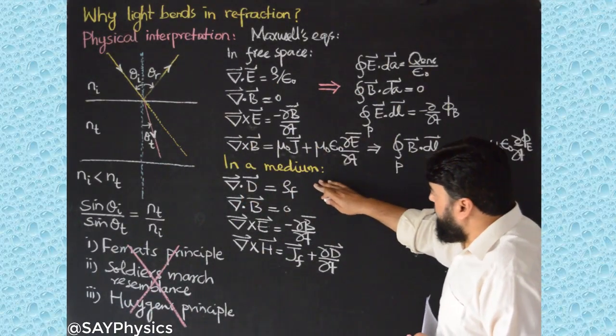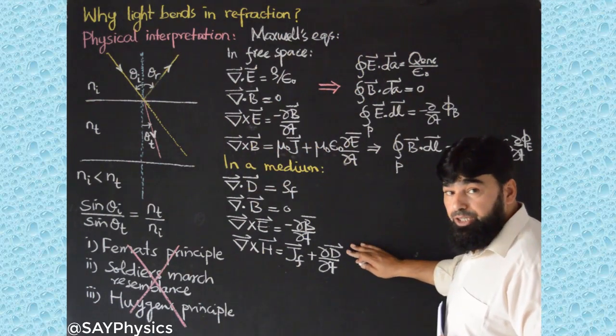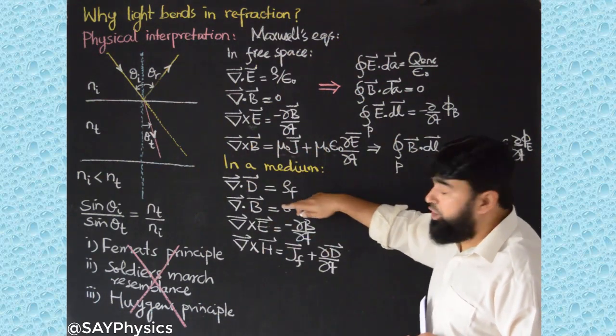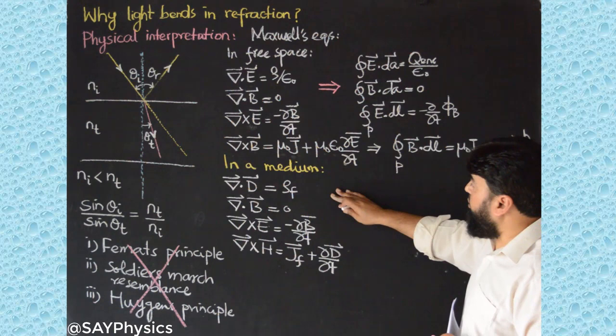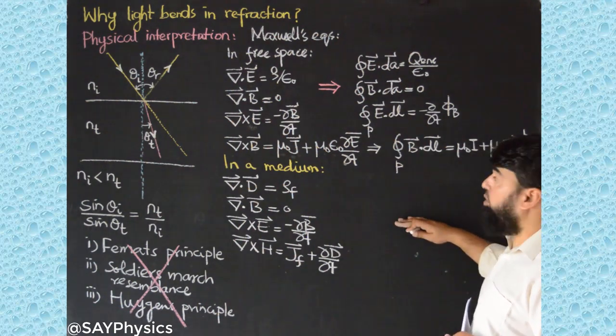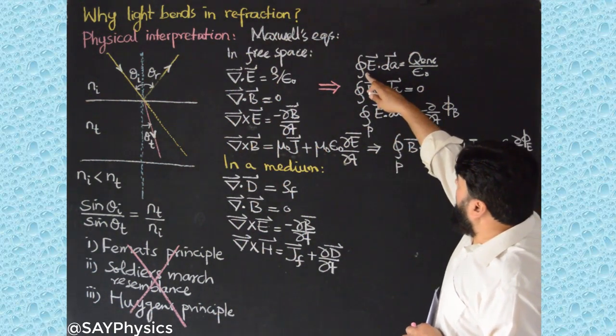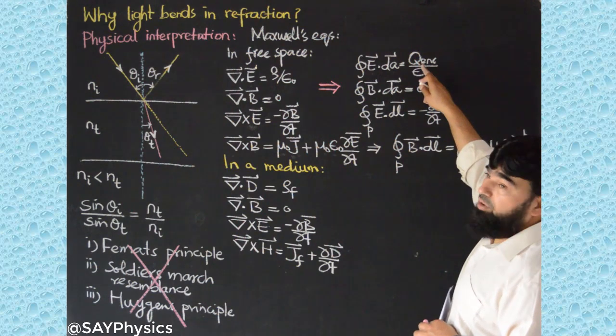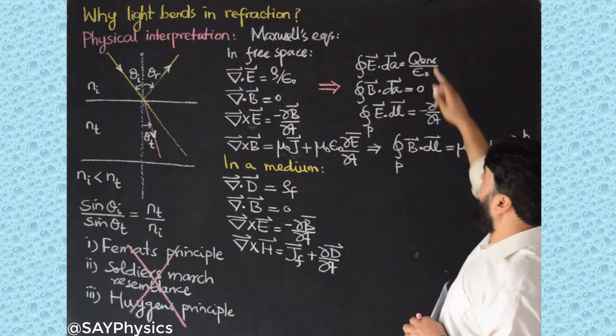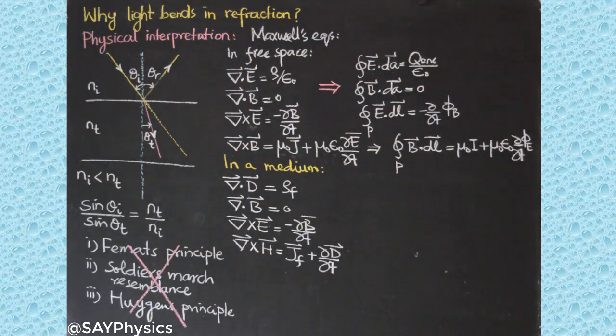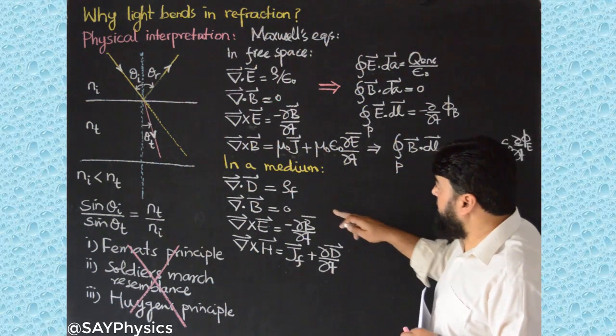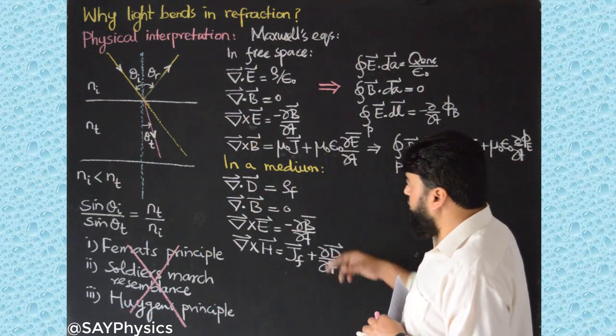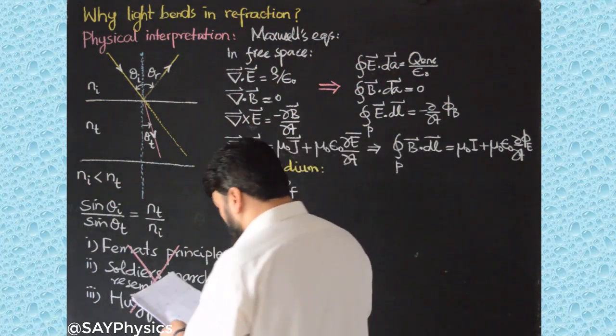I just wanted to tell that the equations actually change like this. Now these can be converted into integral form like this: the closed surface integral D dot dA will be equal to q_f enclosed, only the free charge enclosed. And similarly the others will be changed like this, but I am not going to write all those equations. I will focus only on the Helmholtz equation.